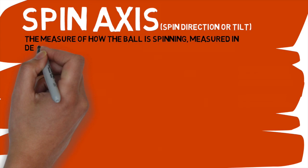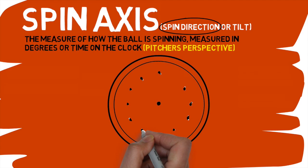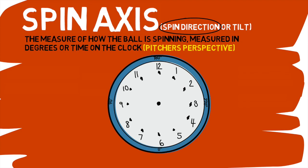Before we can get into that, we first need to define what we're looking at. Spin axis is the measure of how the ball is spinning, measured in degrees or as time on a clock. It's also referred to as spin direction or tilt. I personally prefer spin direction because it's the best description of what this metric is actually measuring.